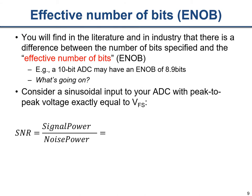Another important definition is the effective number of bits. You can buy ADCs from companies like Analog Devices or Texas Instruments, and they'll advertise a 10-bit ADC which presumably has 10 bits. Then you read the datasheet and it says the effective number of bits is 8.9. So how can you say it's a 10-bit ADC if it only has 8.9 bits? What does a fractional effective bit mean?